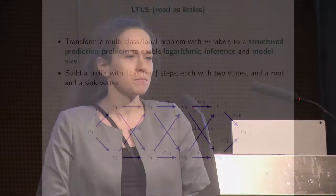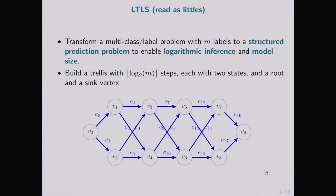The idea behind LITTLES is to transform a multi-label or multi-class classification problem to a structured prediction problem. This way, we enable efficient inference and make the model small. To do so, we build a trellis, as you see on the side, similar to this one. On this trellis, there are steps like this.